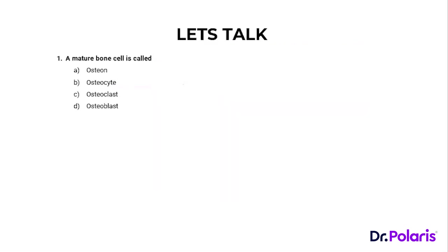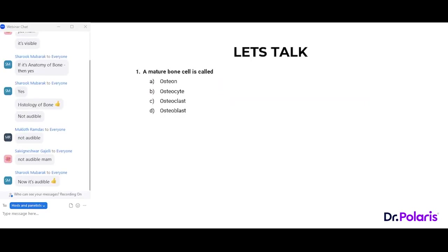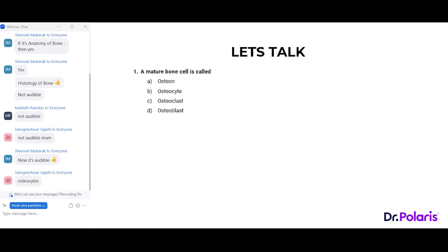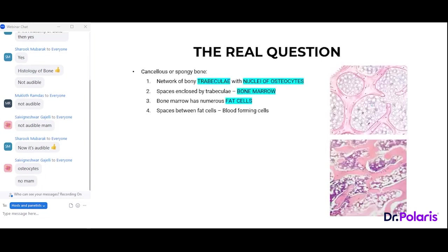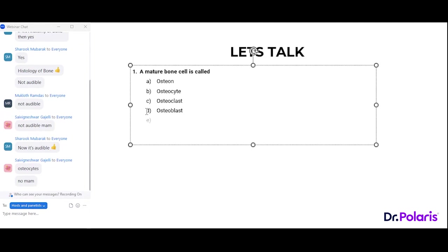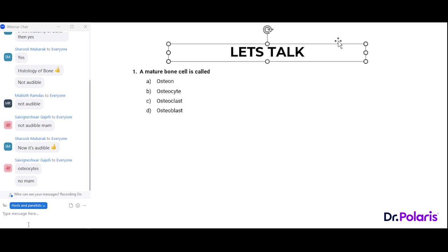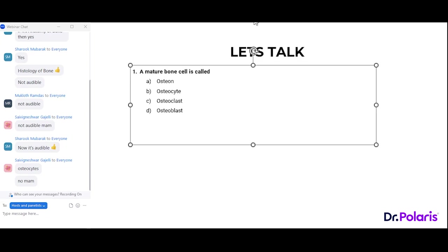Moving to the Q&A session. First question: a mature bone cell is called — the correct answer is osteocyte. The other options — osteoclast, osteoblast, and osteon — are incorrect. Osteocyte is the mature bone cell, as we discussed. Second question: central and perforating canals in compact bone contain blood vessels — that is the correct answer. It is not neurons, bone marrow, or cartilage; it is blood vessels and nerves running through those canals.